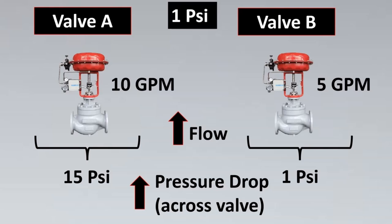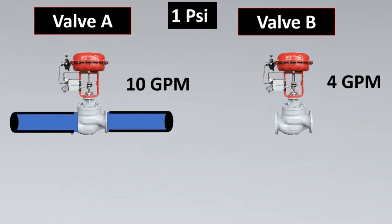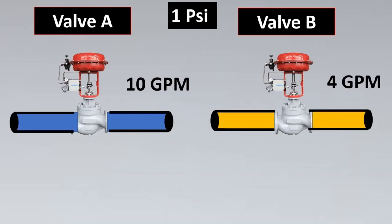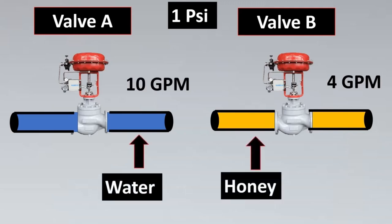This flow increases just because of pressure drop and not because of valve size. So if we want to compare two valves' flow capacity, we have to keep them under the same pressure. Let us take a standard of 1 PSI pressure drop between the two valves. Now if I measure the flow, valve one gives 10 GPM and valve two gives 4 GPM. There could be the case that for the first valve the fluid was water and for the other valve the fluid was honey. Honey is very dense so it will have a lower flow rate compared to water. We must also ensure the liquid between them is the same if we want to compare flow capacity.